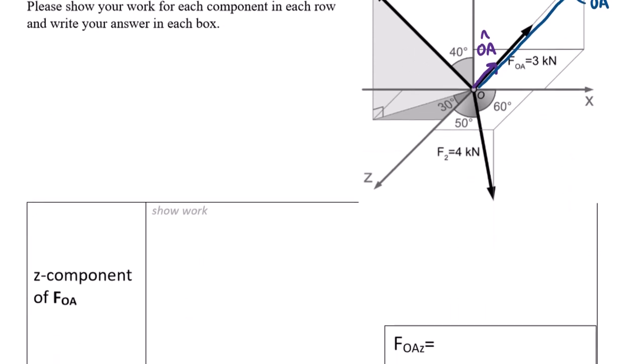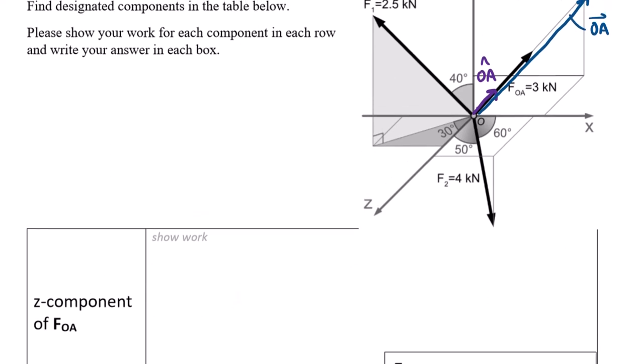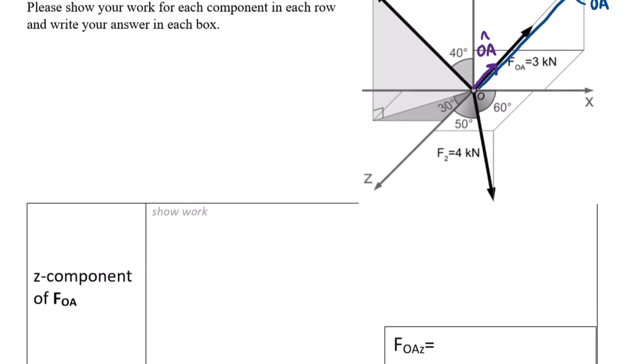Let's work on that one. Since that vector goes all the way from the origin out to that point, it's pretty easy to find its coordinates. We have that OA vector equals, using hard brackets for vector components, 6, 5, negative 3.5, and those are meters.